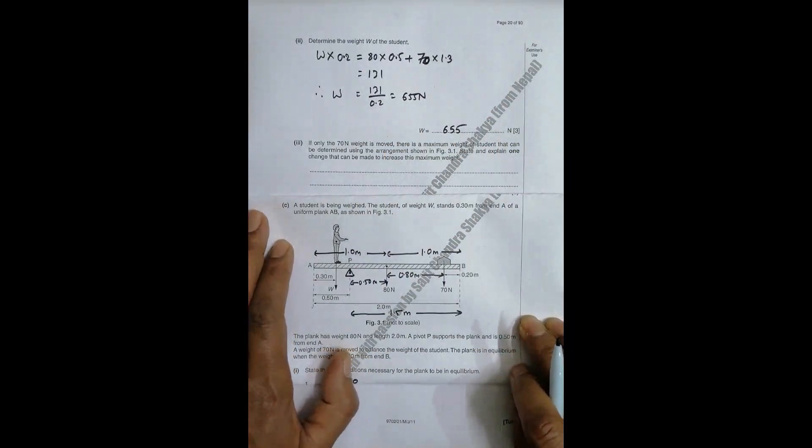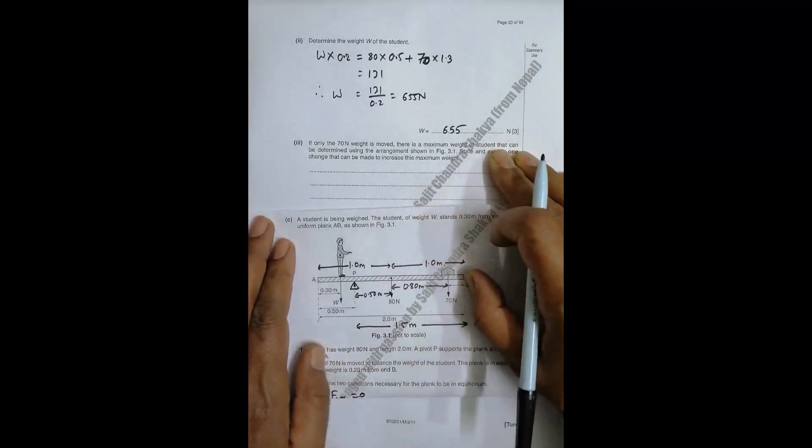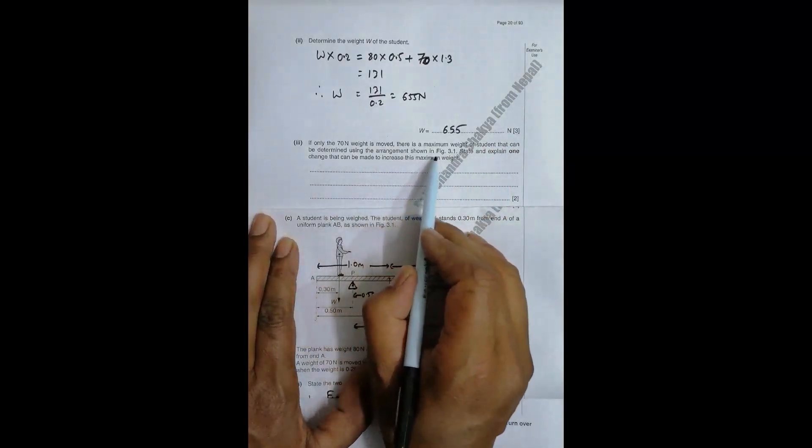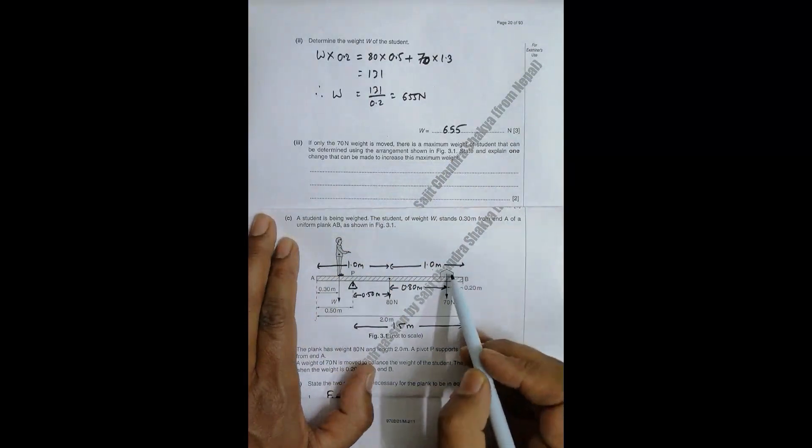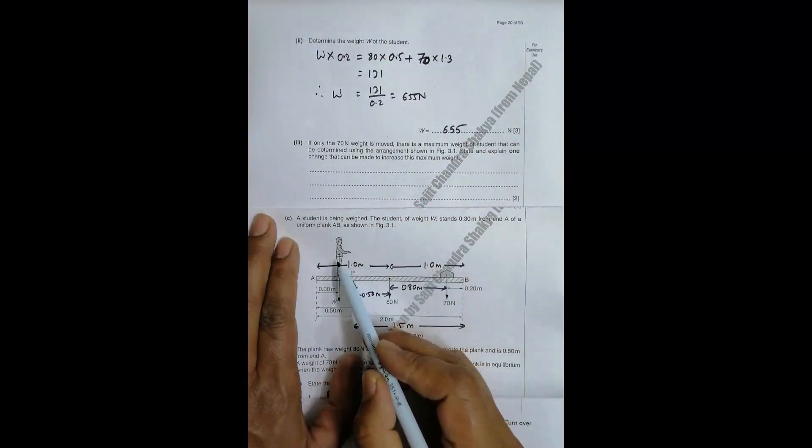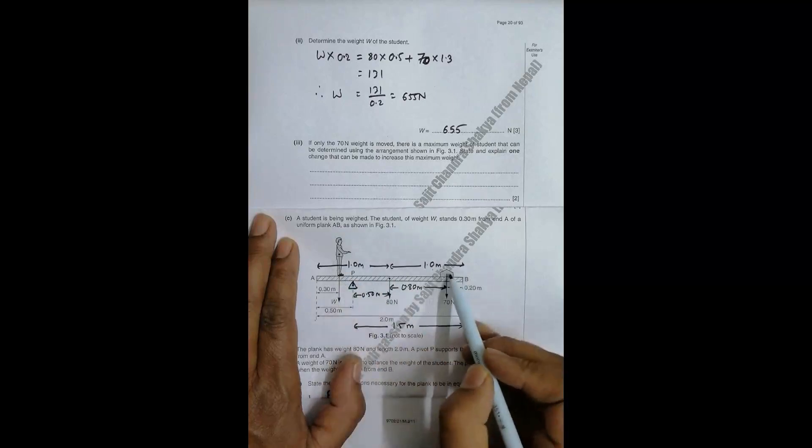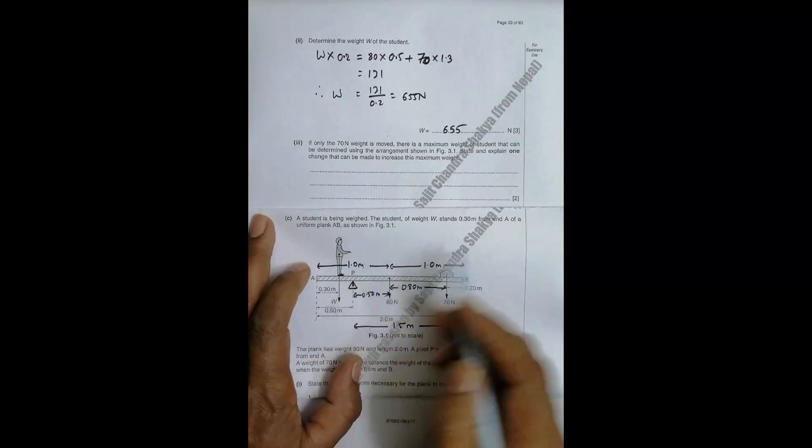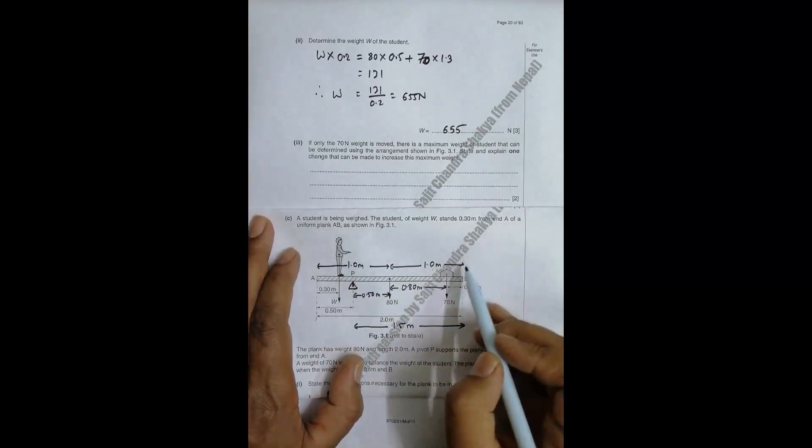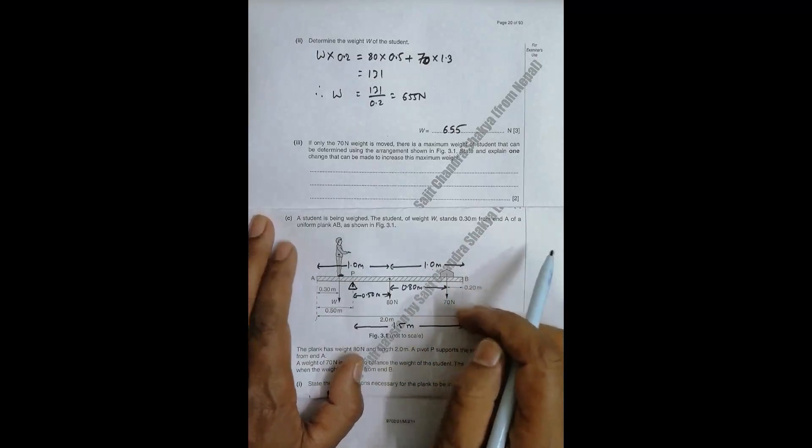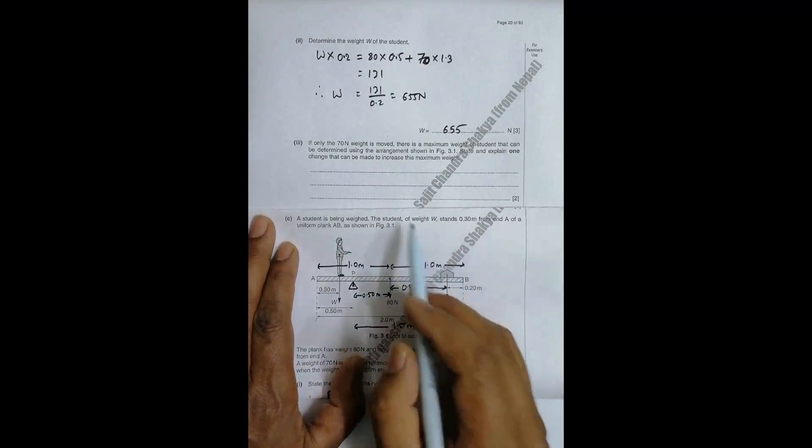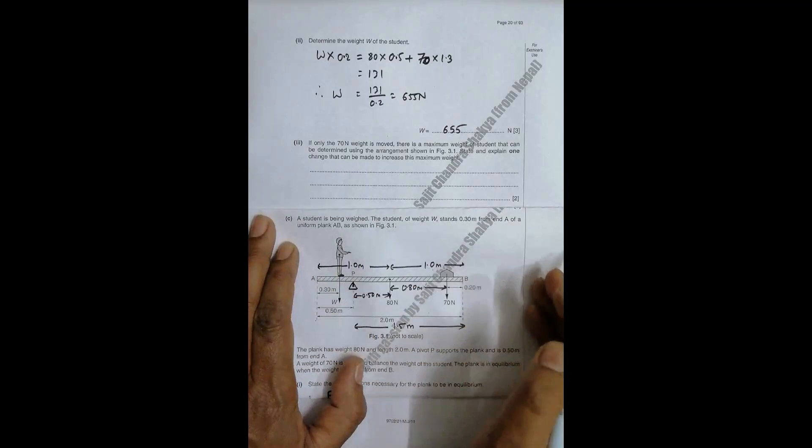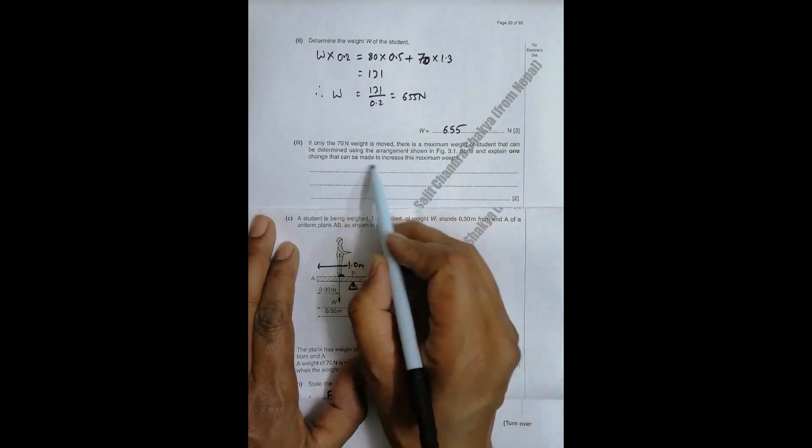Now in the last question, if only the 70 Newton weight is moved, there is a maximum weight of a student that can be determined using the setup shown in figure 3.1. If we move it too near, this thing can tip like this, it can move like this. So if we move this only, there can be a maximum weight of a student that is measurable using this arrangement.